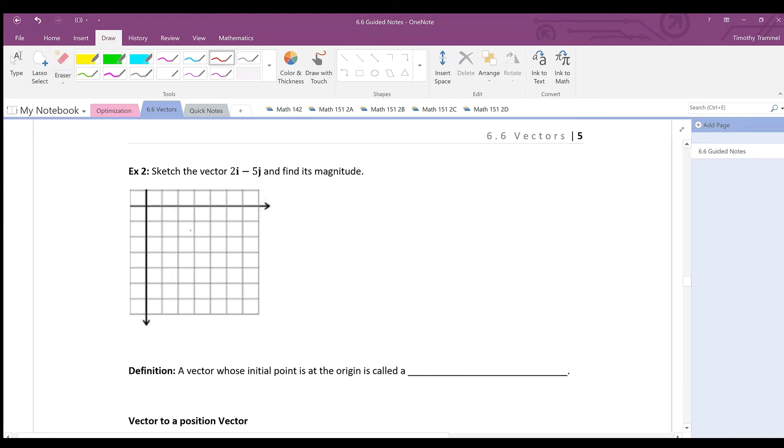Example two: sketch the vector 2i minus 5j and find its magnitude. This is as easy as it sounds - we want to sketch a vector that starts at the origin and ends at 2 comma minus 5. Go over 2 and down 5, and I am just going to connect those two points with a vector. There's our vector 2i minus 5j.